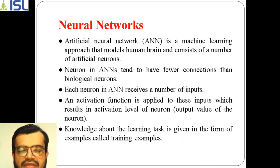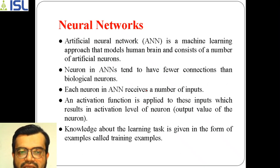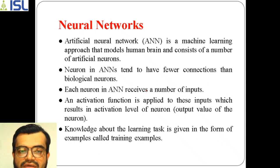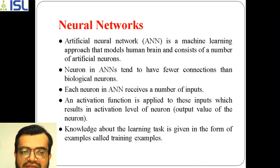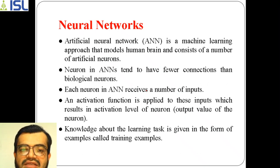Today we're going to discuss the next concept of artificial intelligence, which is neural networks — specifically artificial neural networks. Our brain is also a group of neurons, a connection of neurons. What we are discussing today is not the human brain, but how a network has been artificially built with the help of neurons. Artificial neural network, as mentioned in the previous session, is one type of machine learning strategy.